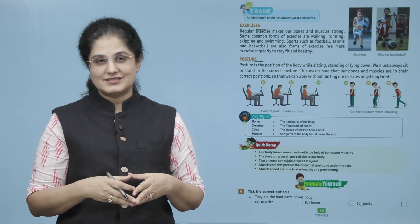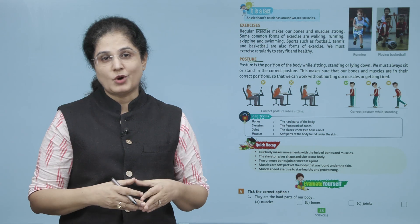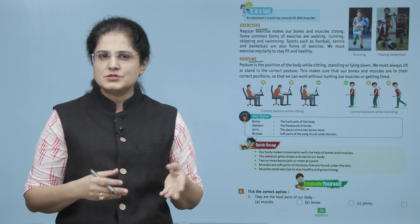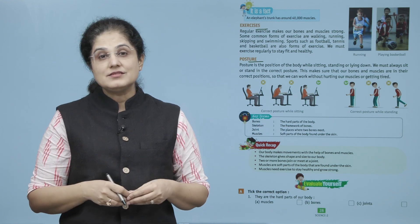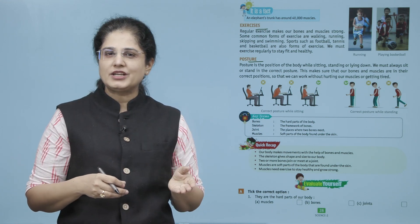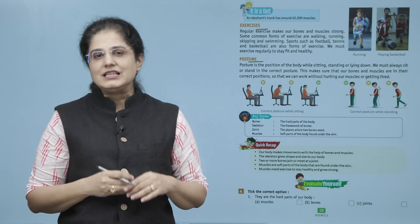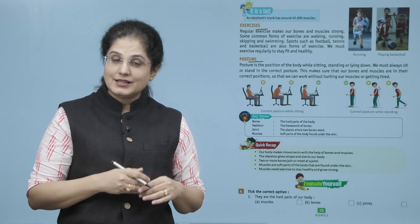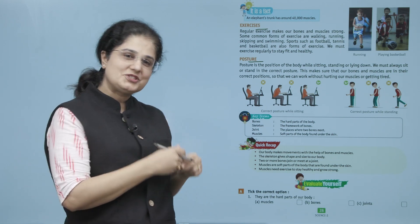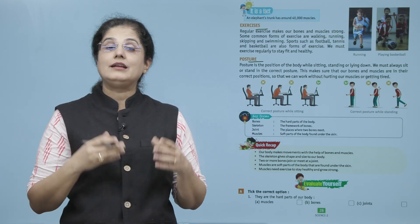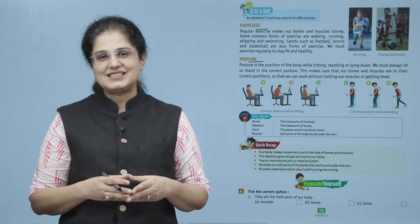Let's take a quick recap. Our body makes movements with the help of bones and muscles. The skeleton gives shape and size to our body. Two or more bones join or meet at a joint. Muscles are soft parts of the body found under the skin. Muscles need exercise to stay healthy and grow strong. I hope this chapter is clear to all and answering questions based on this chapter will now be easy.